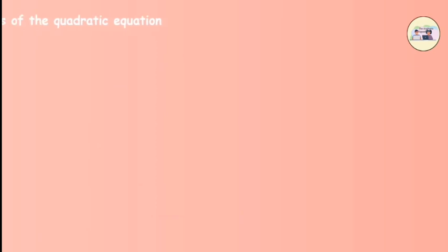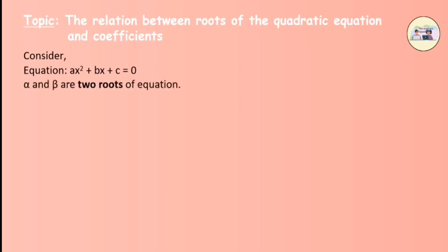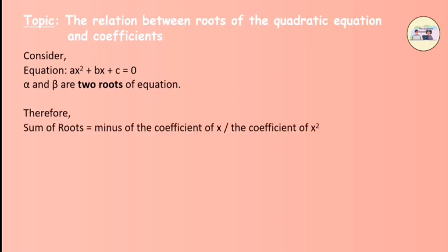The relation between roots of the quadratic equation and coefficients. Consider the equation ax squared plus bx plus c equals 0, where alpha and beta are the two roots. The sum of the roots is equal to minus the coefficient of x upon the coefficient of x squared, i.e., alpha plus beta is equal to minus b upon a.